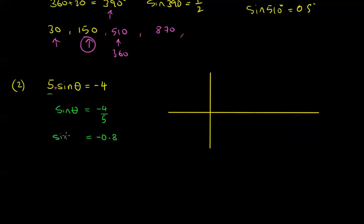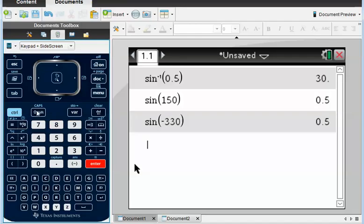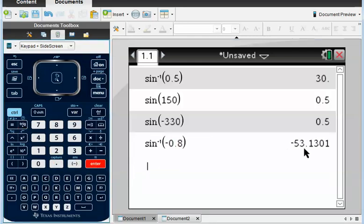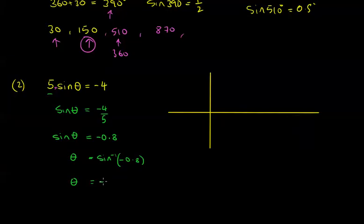So we've got to the stage where sine of something equals minus 0.8. Theta equals sine to the minus one of minus 0.8. What does the calculator tell us? Using trig, sine to the minus one of minus 0.8, we get minus 53.1. So theta is minus 53.1 degrees to one decimal place. Now let's try to find other potential answers for theta.